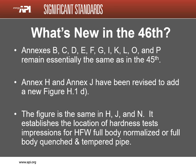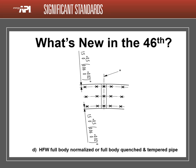Annex H and Annex J have been revised to add new figures H1D and J1D respectively. The figure is the same in Annexes H, J, and the new Annex N. It establishes the location for hardness test impressions for HFW full body normalized or quenched and tempered pipe. This is the new figure that is found in Annexes H, J, and N.